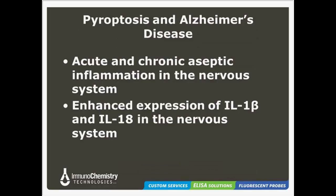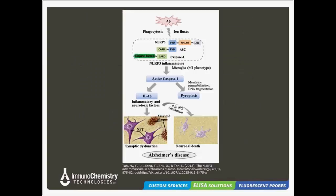Pyroptosis is a factor in both acute and chronic aseptic inflammation in the nervous system, making it a mechanism of interest in a variety of neurodegenerative diseases. In Alzheimer's disease, enhanced expression of IL-1 beta and IL-18 has been observed in the nervous system. This figure illustrates one hypothetical model that links amyloid beta to the NLRP3 inflammasome to pathology of synaptic dysfunction and neuronal death. The amyloid beta peptide could induce the activation of the NLRP3 inflammasome through potassium ion fluxes or phagocytosis. Once activated, the NLRP3 inflammasome activates caspase-1, leading to the secretion of IL-1 beta. IL-1 beta could go on to induce amyloid plaque formation, neurofibrillary tangles, and neuronal death.